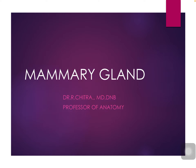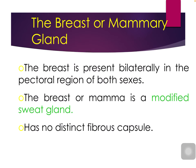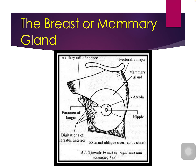We will move on to the topic mammary gland. The mammary gland is present bilaterally in both sexes in the pectoral region. It is a modified sweat gland, and so it has no distinct fibrous capsule. This is the mammary gland situated in the pectoral region.